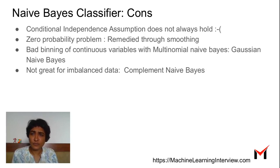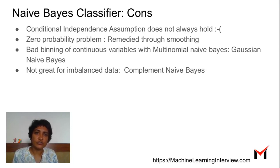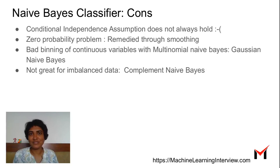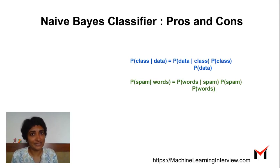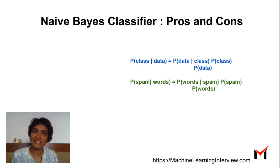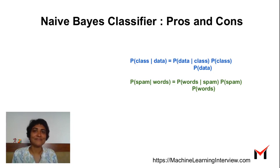The final disadvantage is that Naive Bayes is not great for imbalanced data, and the way to correct that is to use something called Complement Naive Bayes, which we'll cover in another video. To recap, we looked at how the Naive Bayes classifier works, and we looked at the advantages and disadvantages of using it.